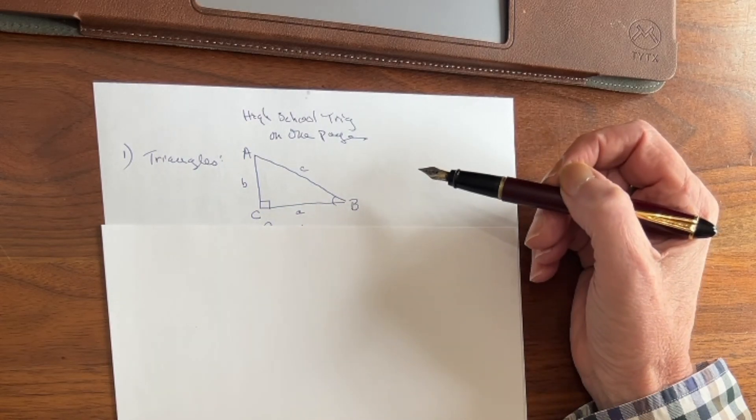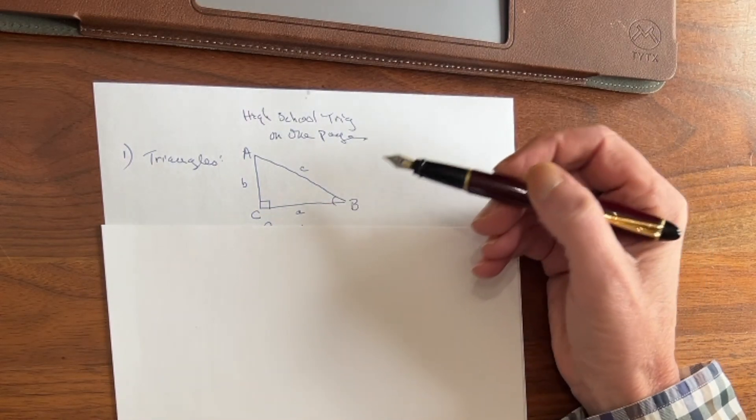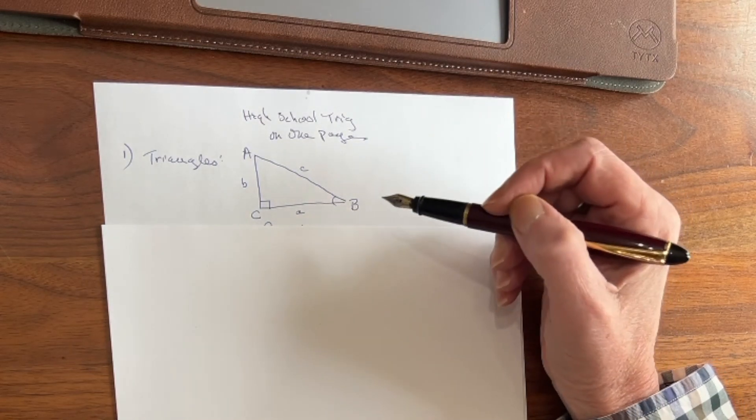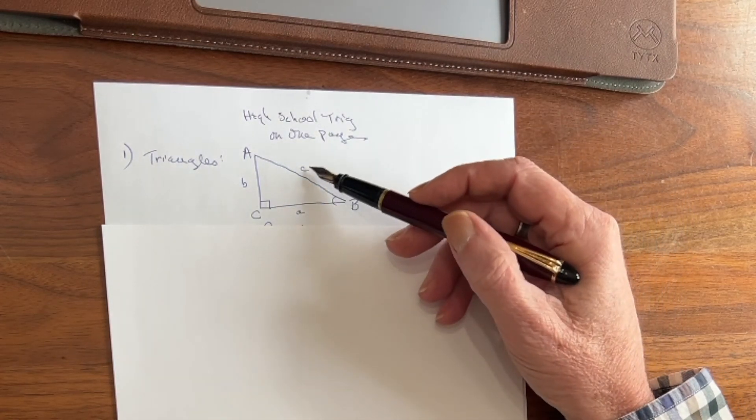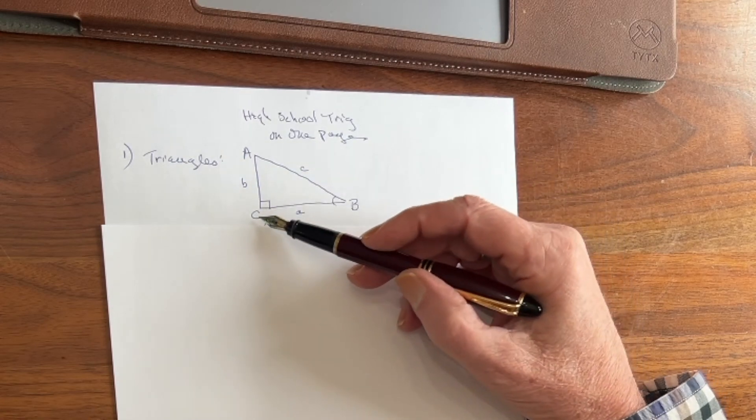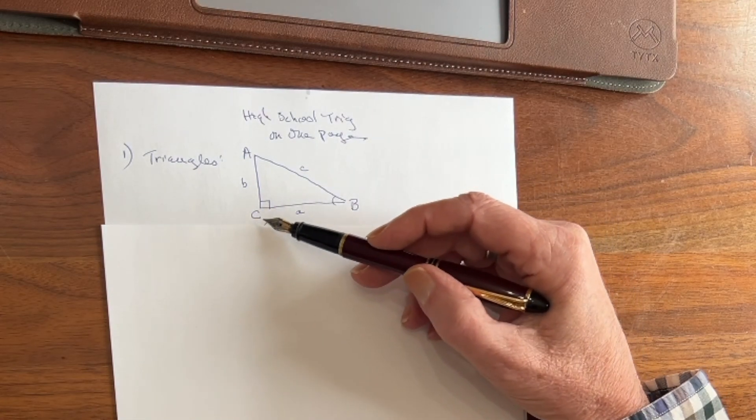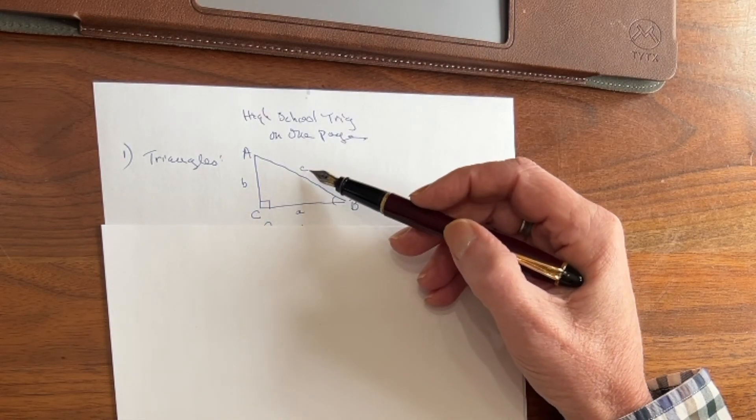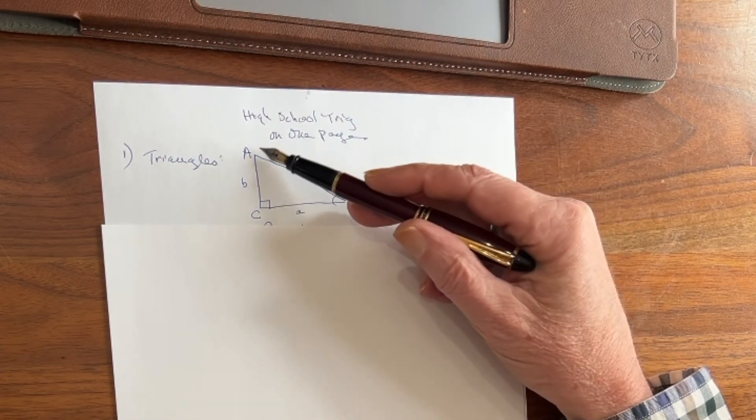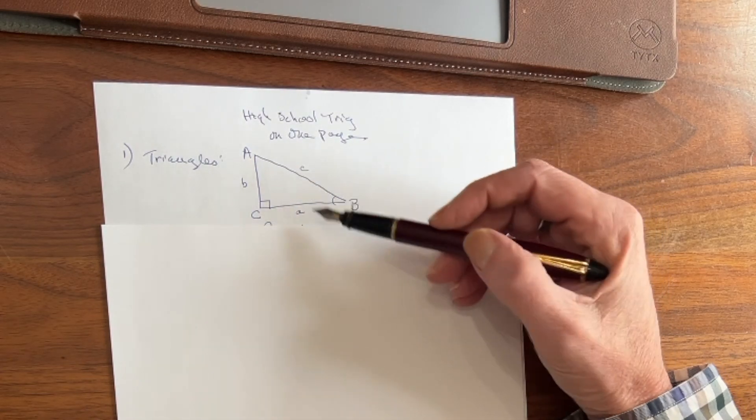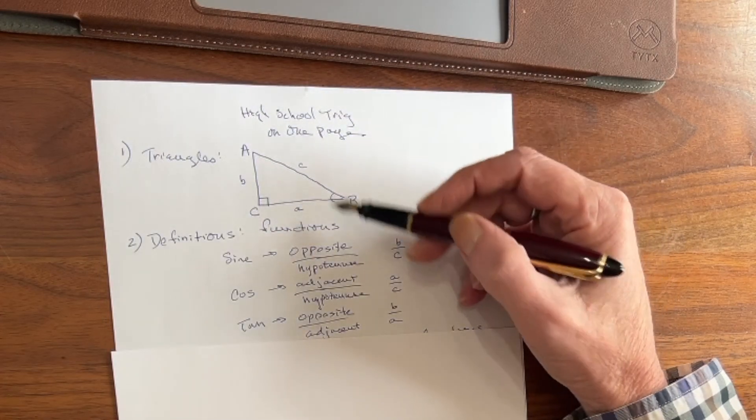B, on the other hand, is not a right angle, and that's why it's got an arc on it. Then we name the sides using lowercase letters named after the angle opposite them. So the side that's opposite angle C is lowercase c, opposite angle B is lowercase b, and opposite angle A is lowercase a. So that's how we name triangles.